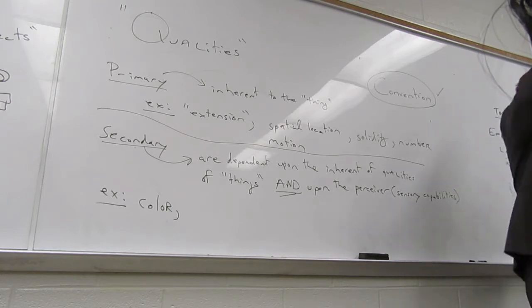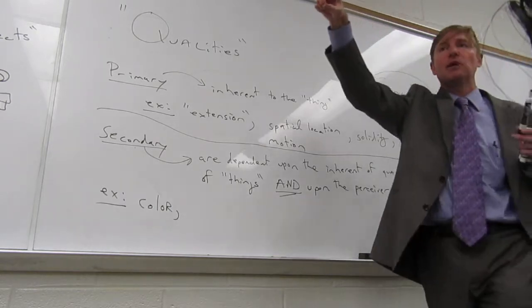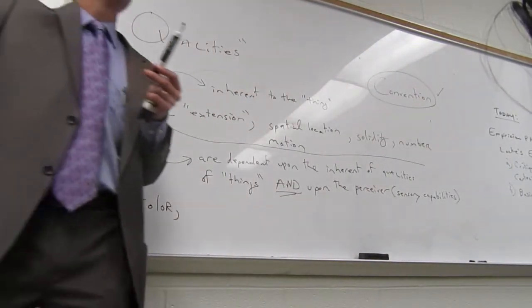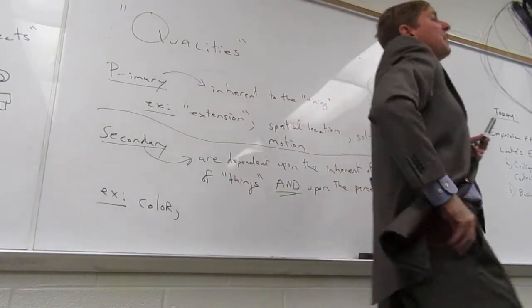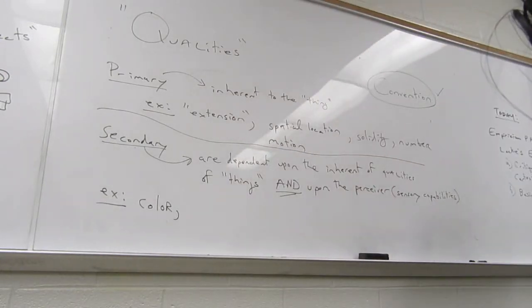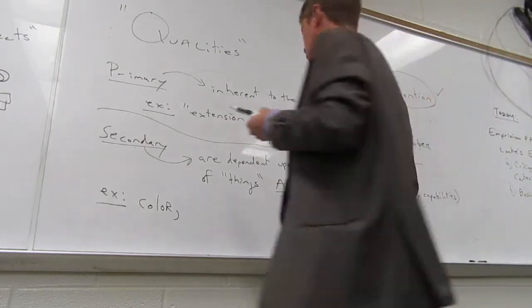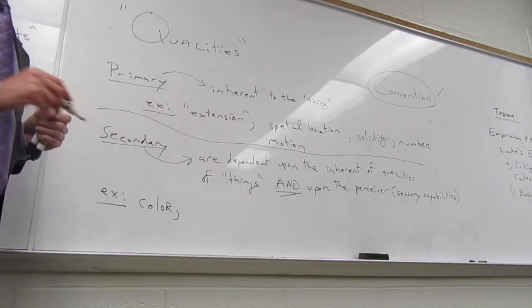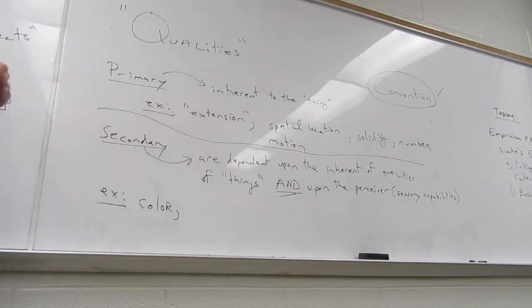Now notice when I say I cannot know with a capital K, I'm talking about for certain. There is really very little that can be known for certain according to this account. Now what other things would count as secondary qualities?